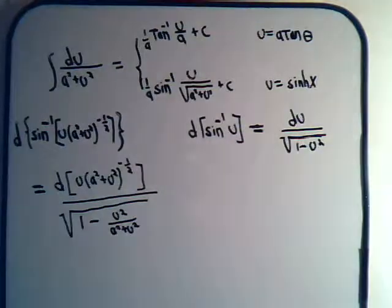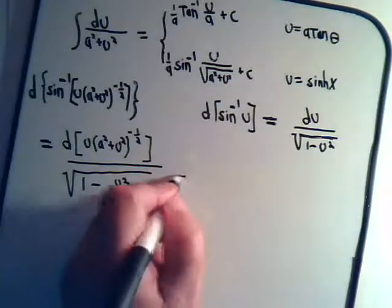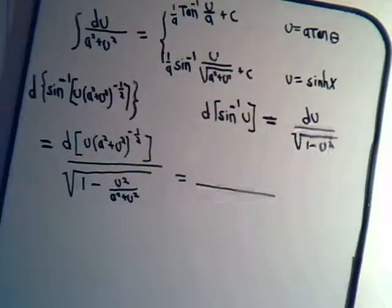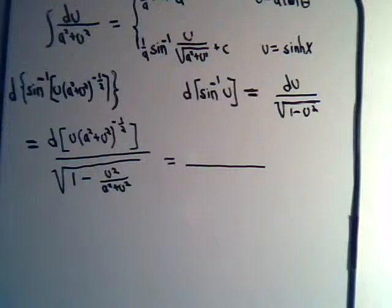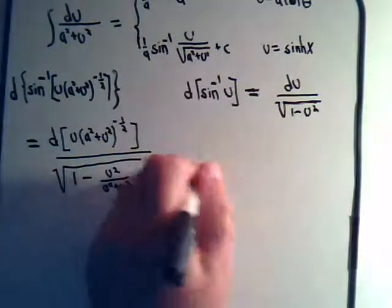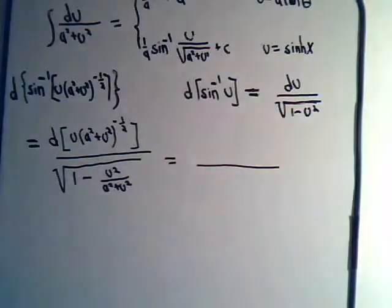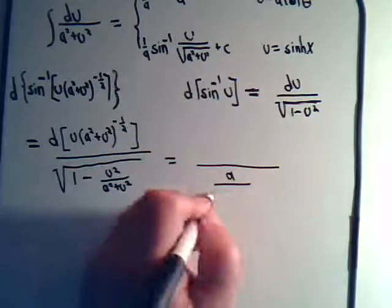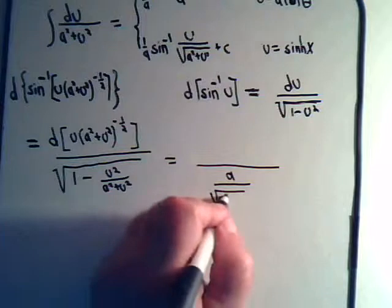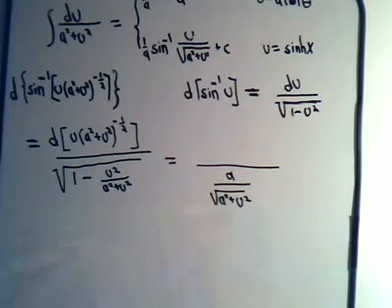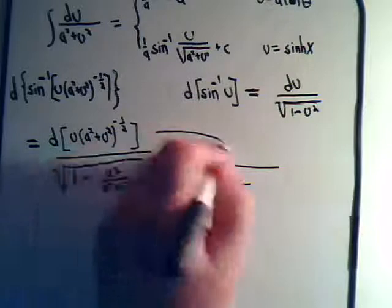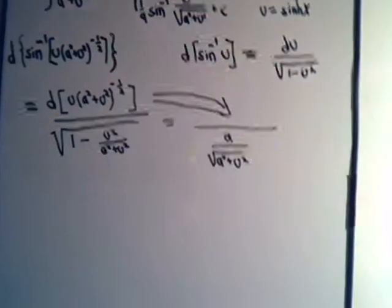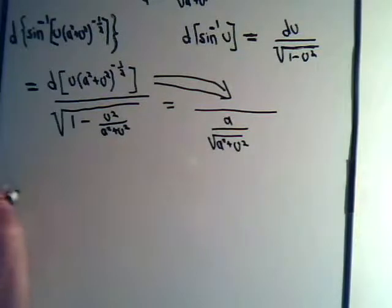That square root sign goes away. And if we do the algebra for the denominator, that's going to be equal to a divided by the square root of a squared plus u squared. Then we still have to deal with this differential here, so let's make some space and tackle that part of the problem.